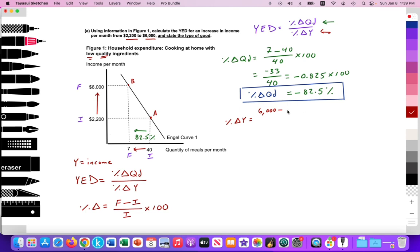Final minus the initial of $2,200 divided by the initial, $2,200. That equals the difference, $6,000 minus $2,200 is $3,800 divided by $2,200.